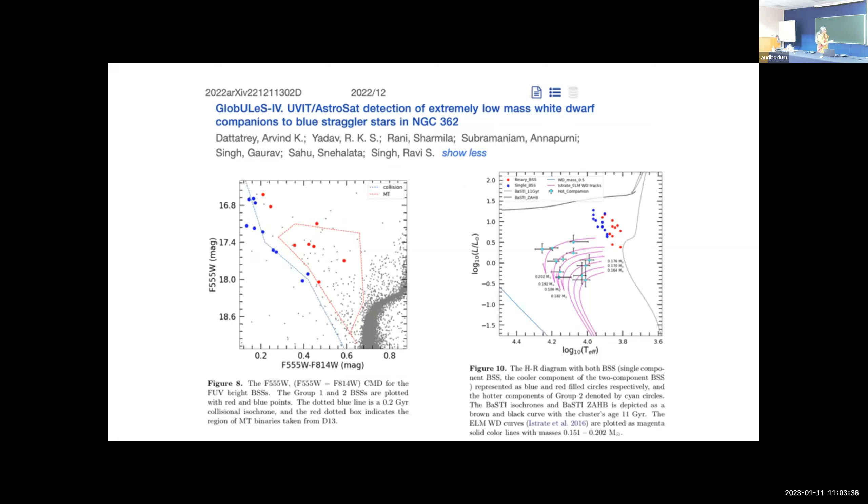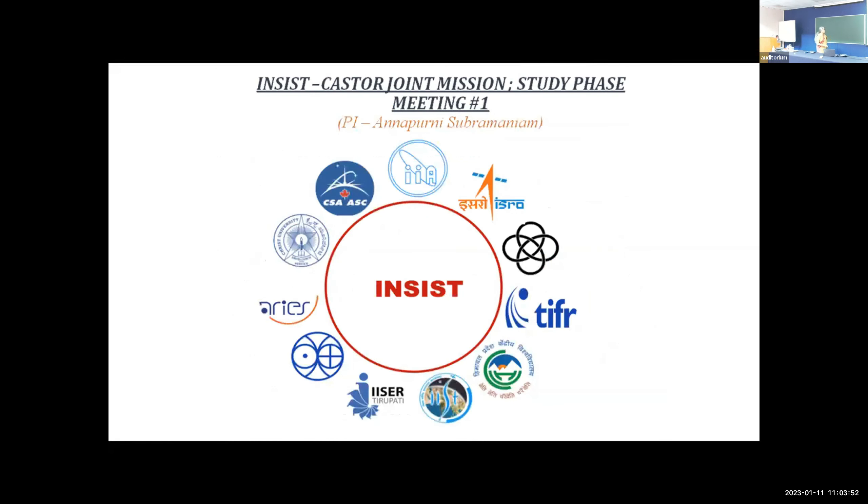So this is the last one and we are working on more of these. A few of them are coming from the legacy survey output. This is led by Arvind and Ramakant from ARIES and the rest of the community. So moving on to the joint mission which is in the study phase. This is the presentation which was shown to the first study phase meeting. This is collaboration between various institutions and these are national collaborators and we have an international collaborator. It is partnering with CSA and their Castor mission.